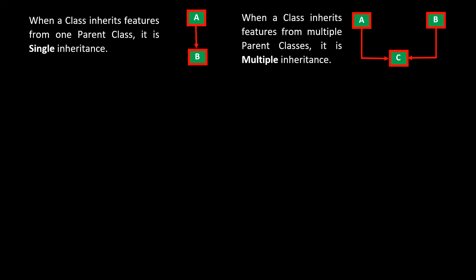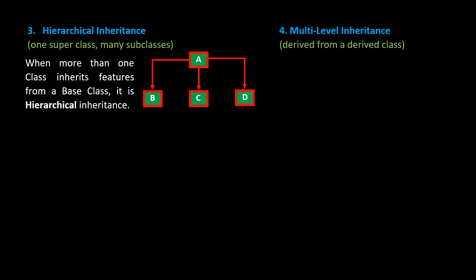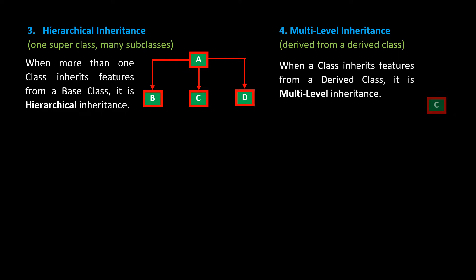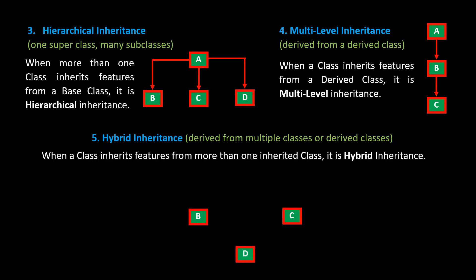3. Hierarchical Inheritance — One Super Class and Many Subclasses: When more than one class inherits features from a base class, it is hierarchical inheritance. 4. Multi-Level Inheritance — Derived from a Derived Class: When a class inherits features from a derived class, it is multi-level inheritance. 5. Hybrid Inheritance — Derived from Multiple Classes or Derived Classes: When a class inherits features from more than one inherited class, it is hybrid inheritance.